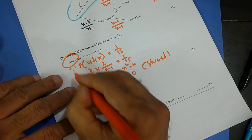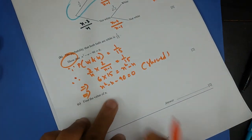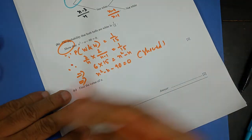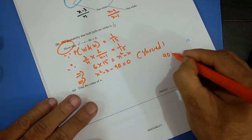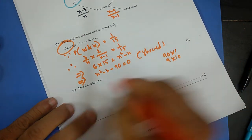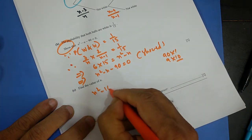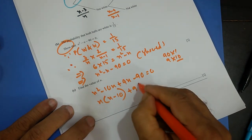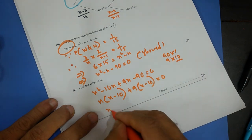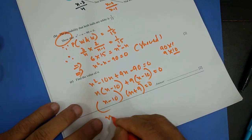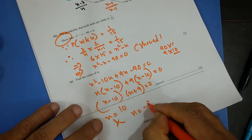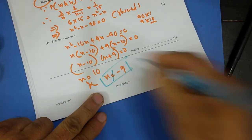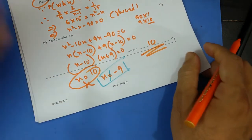Find the value of n. Factorising n² − n − 90 = 0 using middle term break: −10n + 9n gives (n − 10)(n + 9) = 0, so n = 10 or n = −9. Since n is the number of balls, it cannot be negative, therefore n = 10.